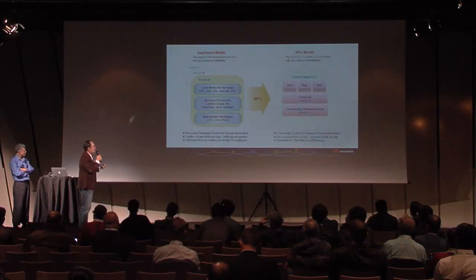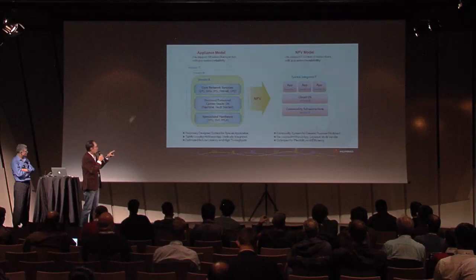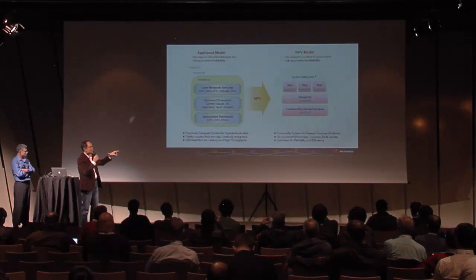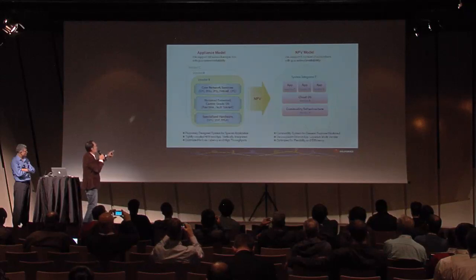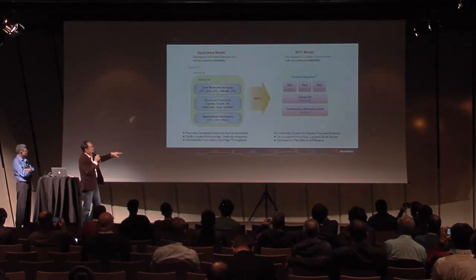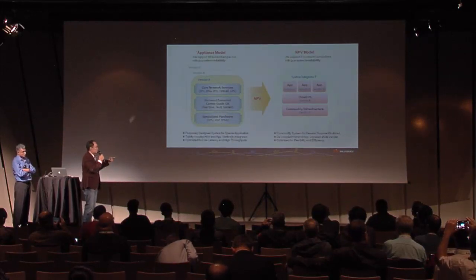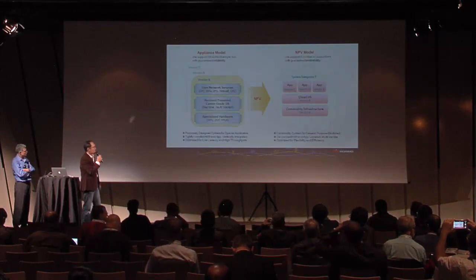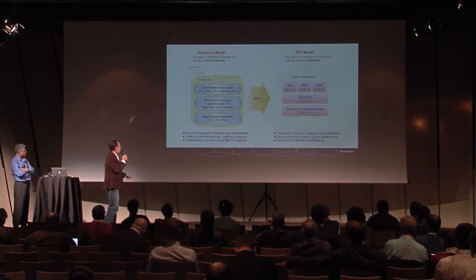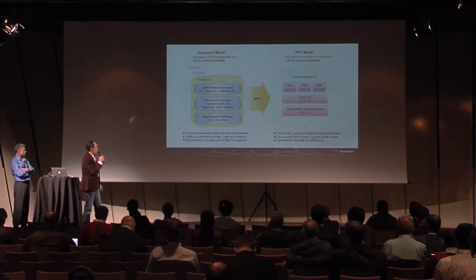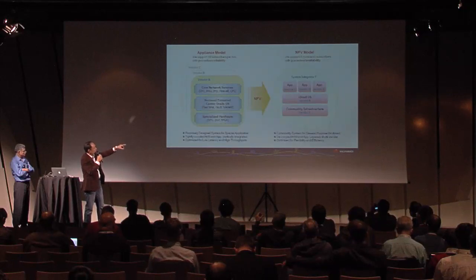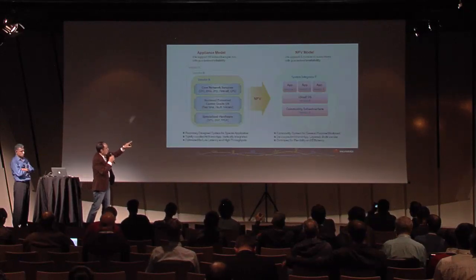As we evolve into the NIV model, it will be more like this: the box is a purposely designed system for specific applications. But in the NIV paradigm, everything will run on top of commodity hardware and commodity systems. In the pre-NIV world, everything is tightly coupled — hardware and applications are vertically integrated. In the post-NIV paradigm, everything will be loosely coupled; solutions will come from different vendors in a multi-vendor, layered approach. The box model is optimized for low latency and highest throughput, whereas the cloud model is optimized for flexibility and efficiency. In the NIV model, availability is more important than reliability.